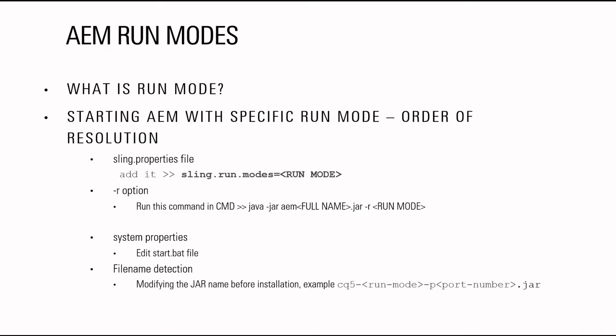First, how can you specify an AEM run mode while running the AEM instance? There are actually four ways. The first is file name detection — when starting AEM for the first time, you can specify the name and port number in the AEM jar file name, which tells AEM what the run mode is. Another option is after starting the jar file, you can edit the batch file that resides in the bin folder and specify the run mode there. I'll explain this in the demo.